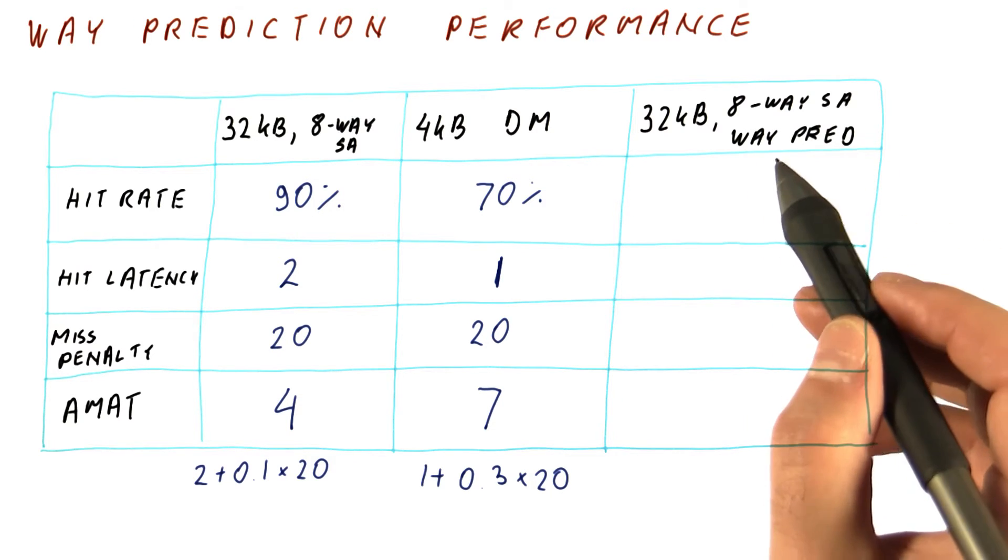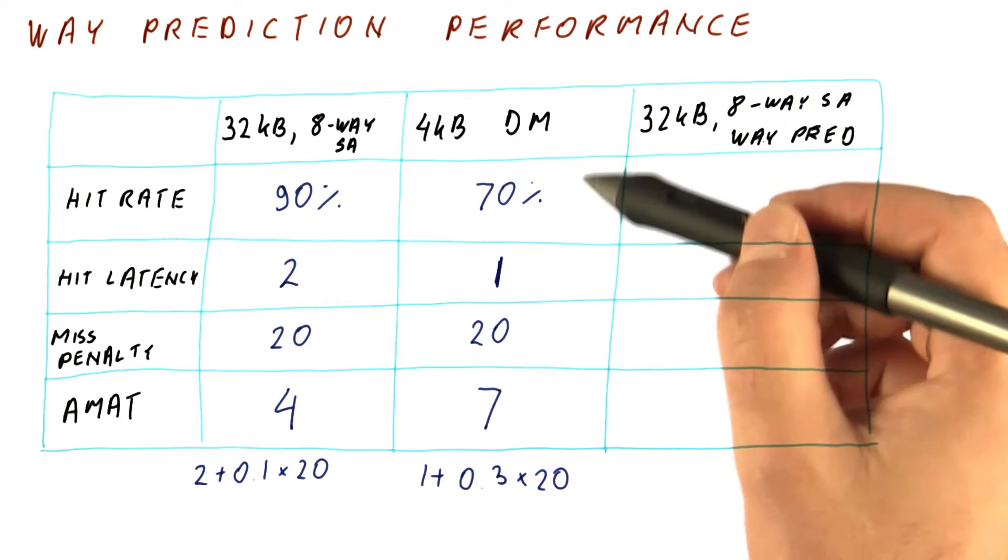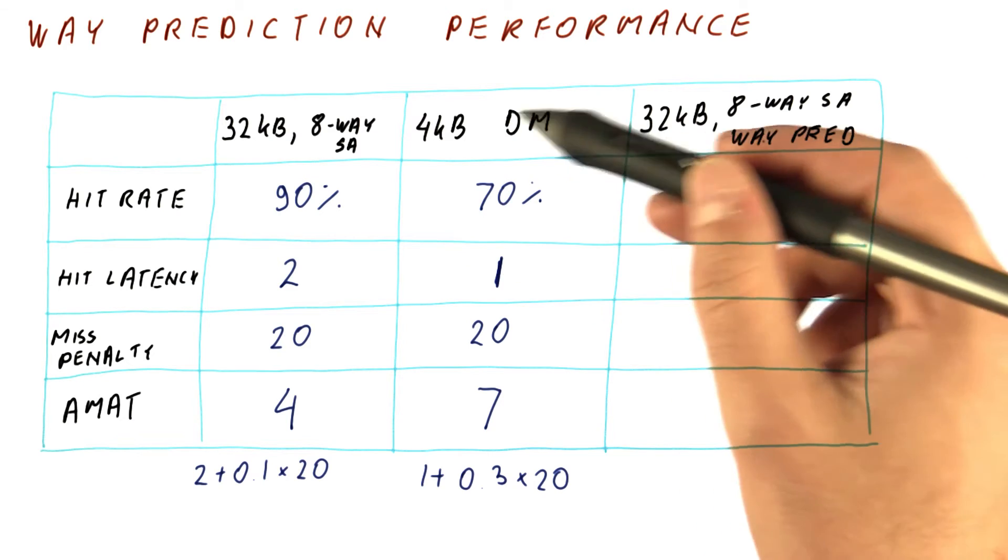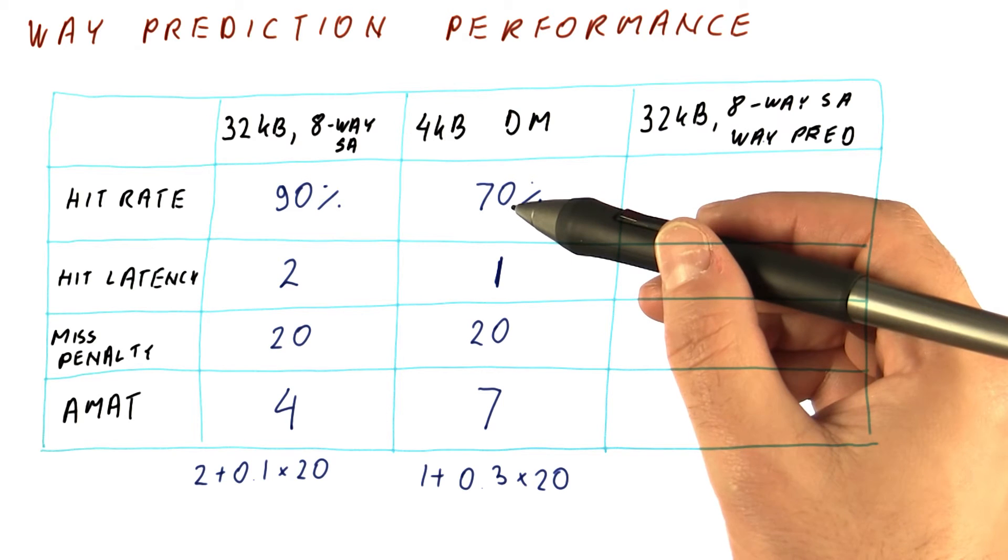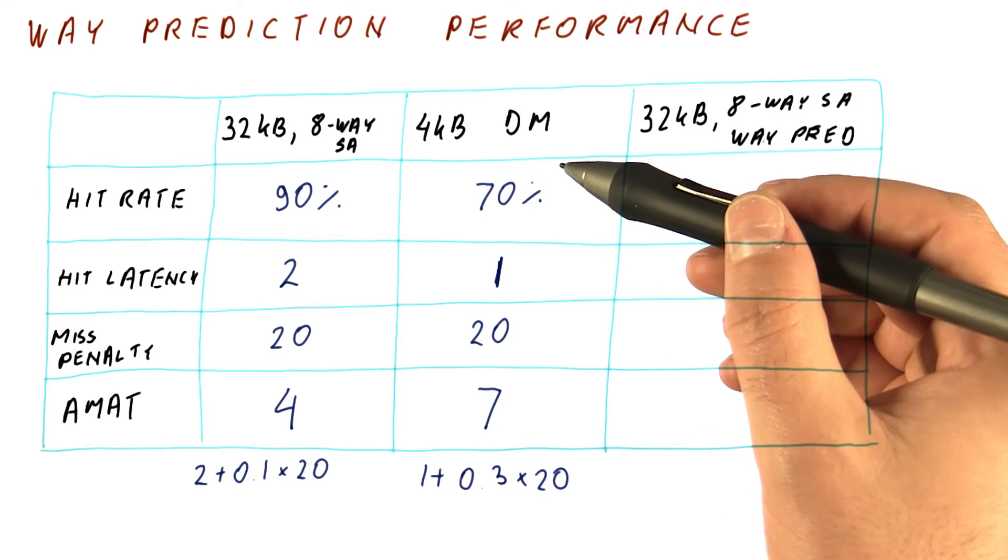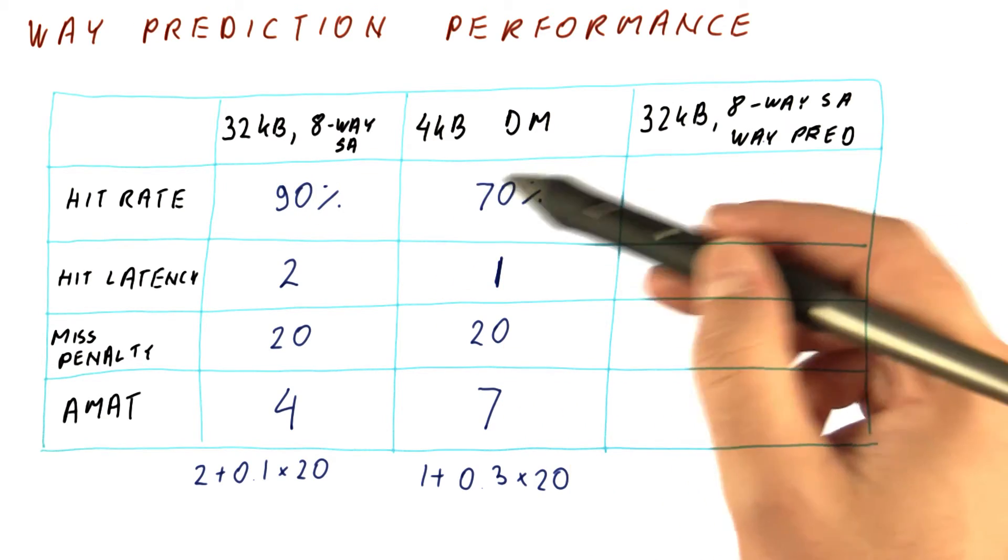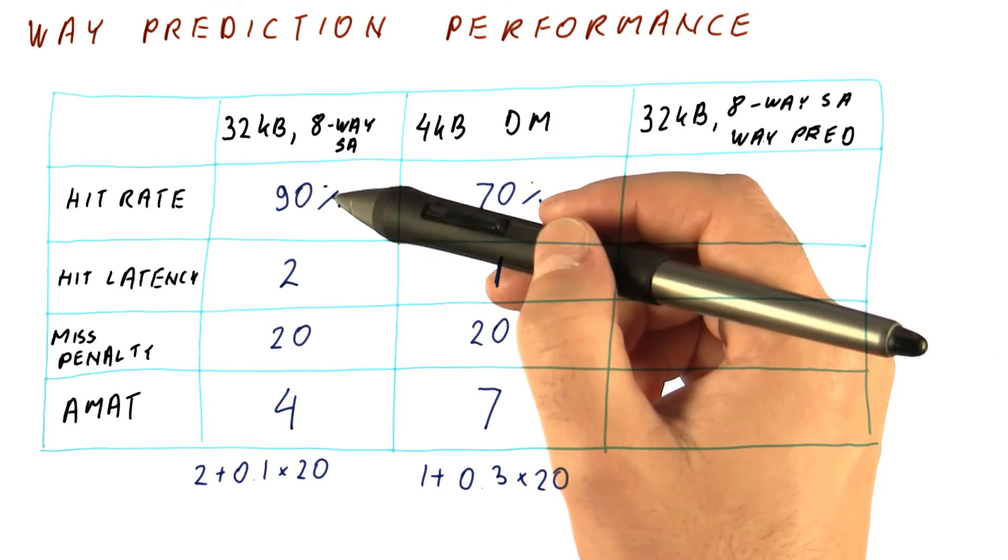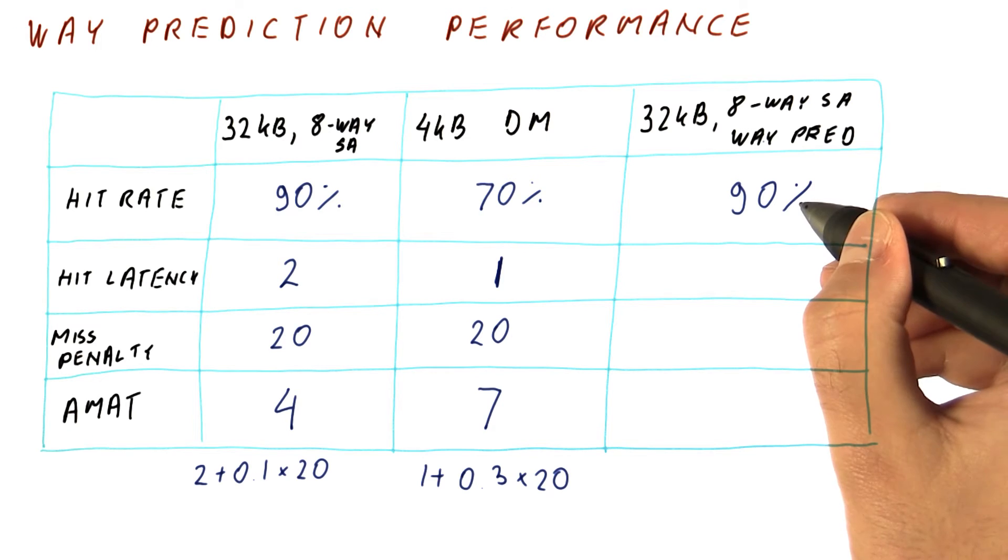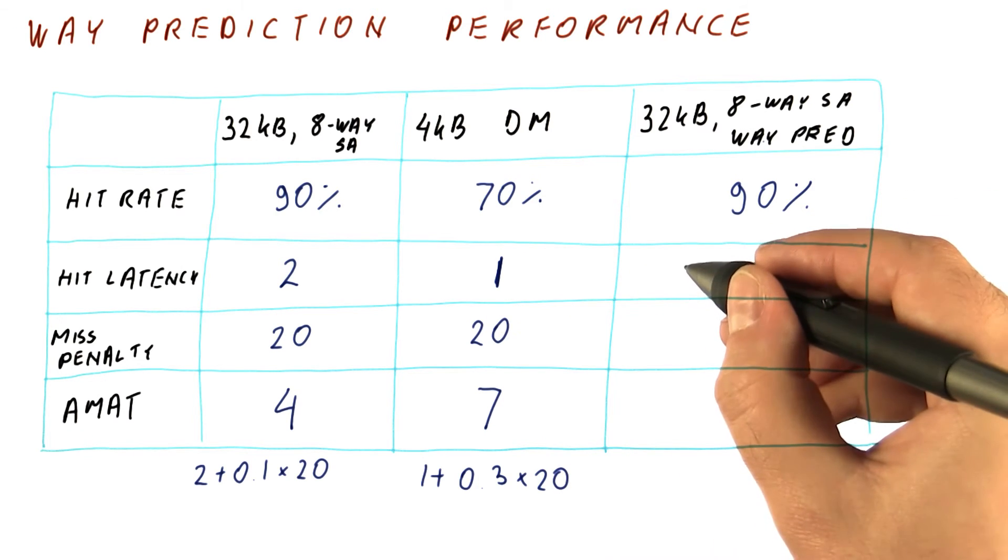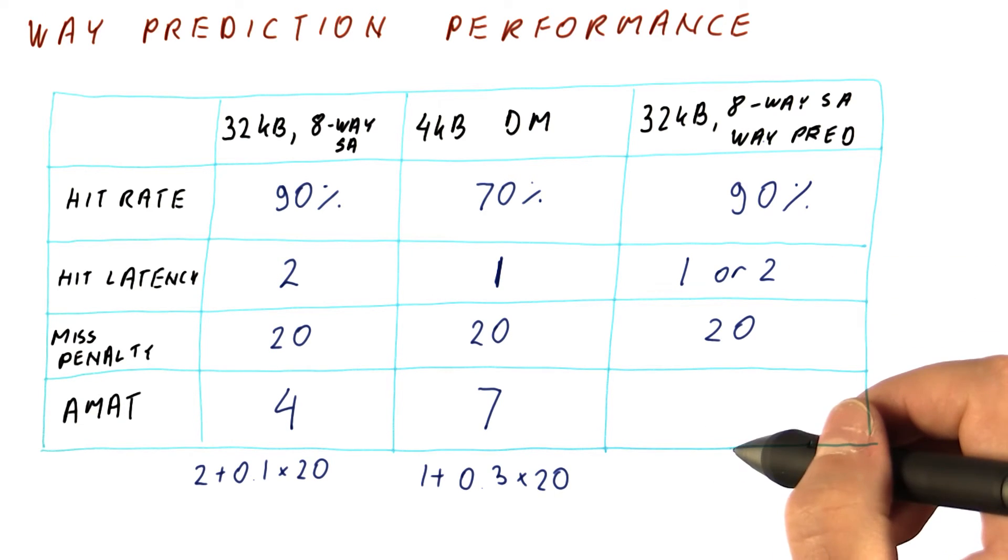However, we are paying an extra cycle each time we access it for the hit latency in order to get the low miss penalties. With the way prediction cache, what we are getting is 70% of the time, we are going to find what we are looking for in the four kilobyte subset that we are checking first, and we will have a one cycle latency for that. In the remaining 20%, we're going to check the rest of the cache, so our overall hit rate will be 90%. What we don't find here, we will still find here if it's in the 32 kilobyte cache. So we get a 90% hit rate overall.